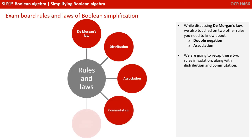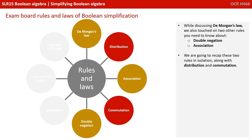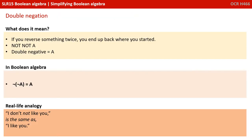While discussing De Morgan's law, we touched on two other rules you need to know about: double negation and association. So we're going to recap those two rules in isolation quickly, then move on and explain distribution and commutation. Double negation: if you reverse something twice, you end up back where you started. So NOT NOT A is a double negative and just means A. In real life, it's like saying 'I don't not like you,' which actually means 'I do like you.'